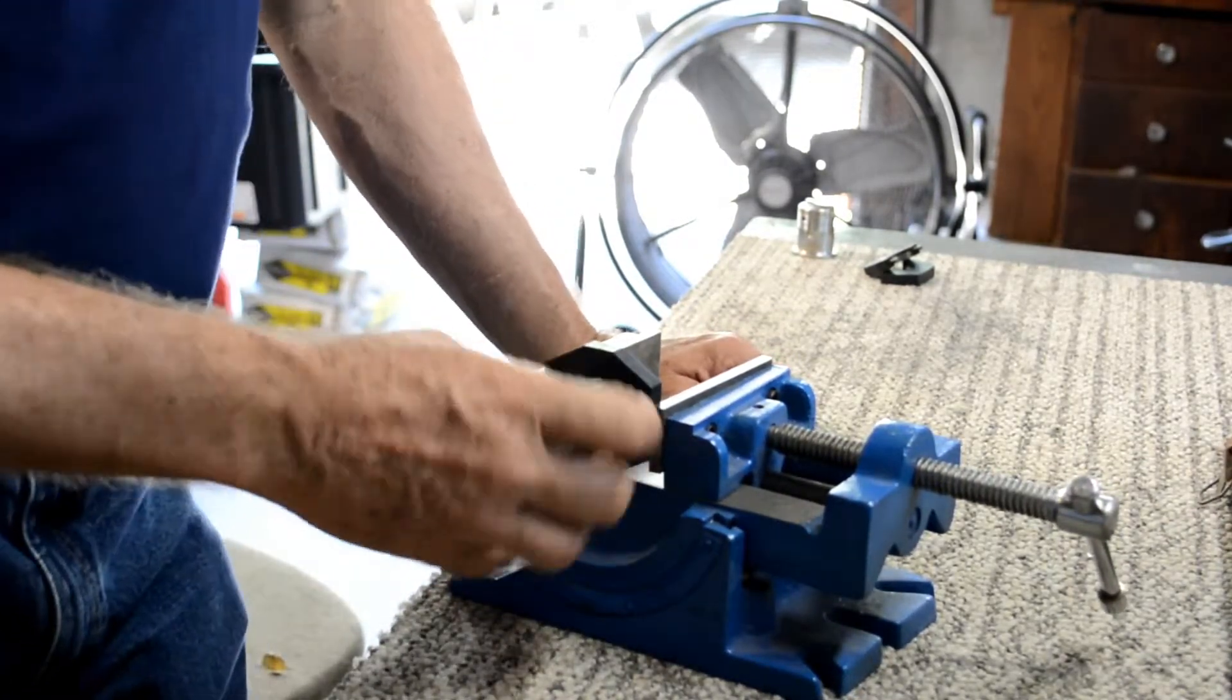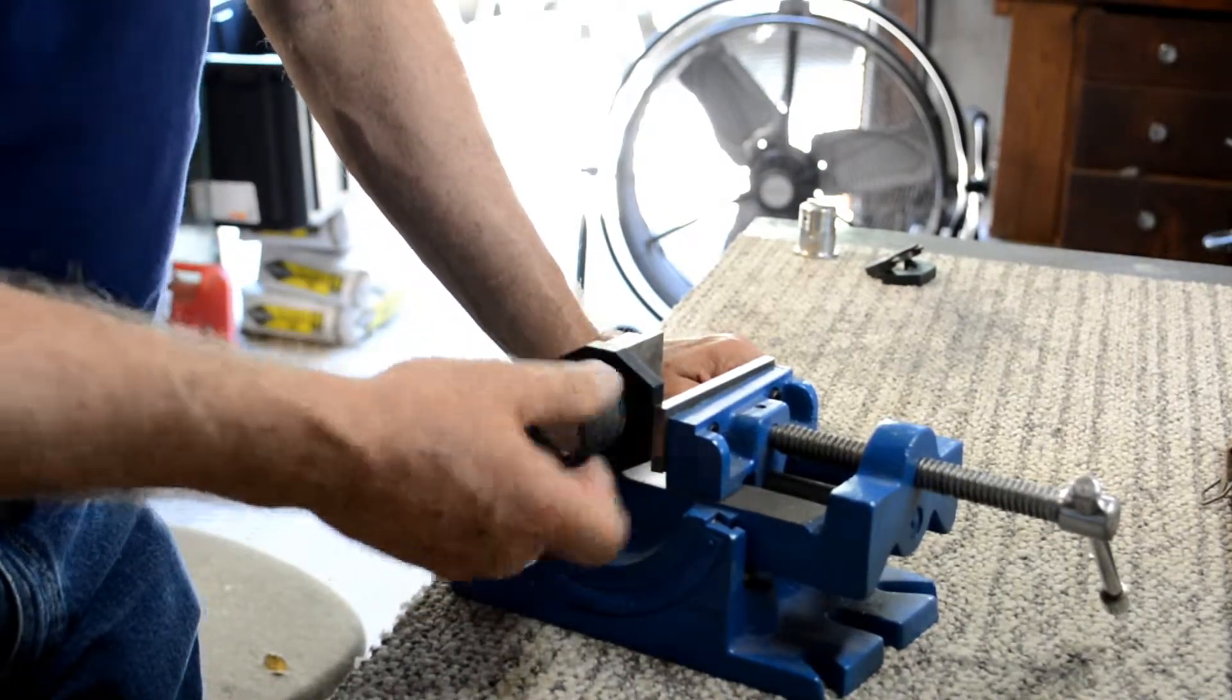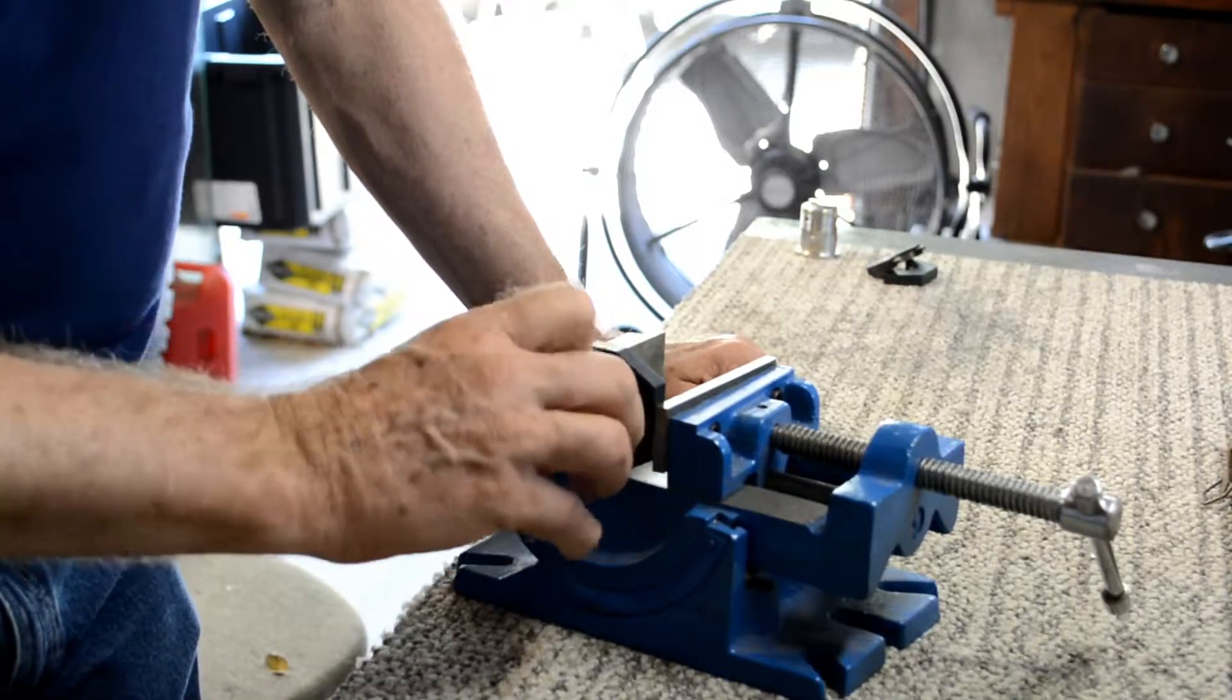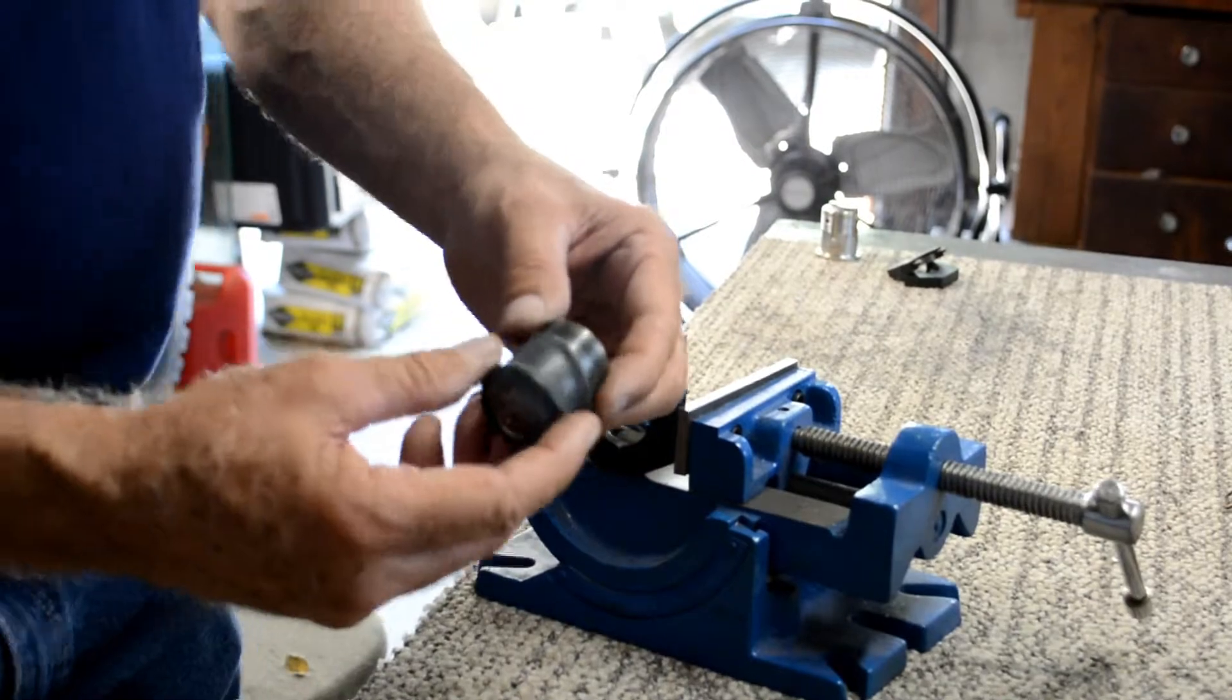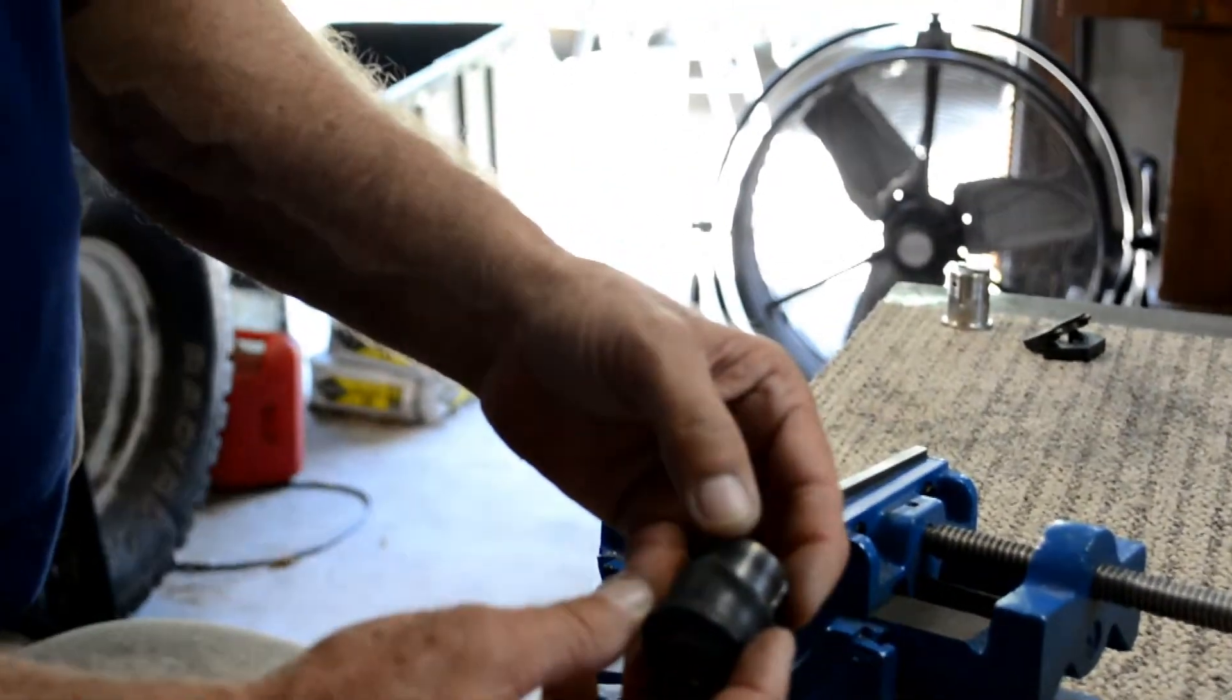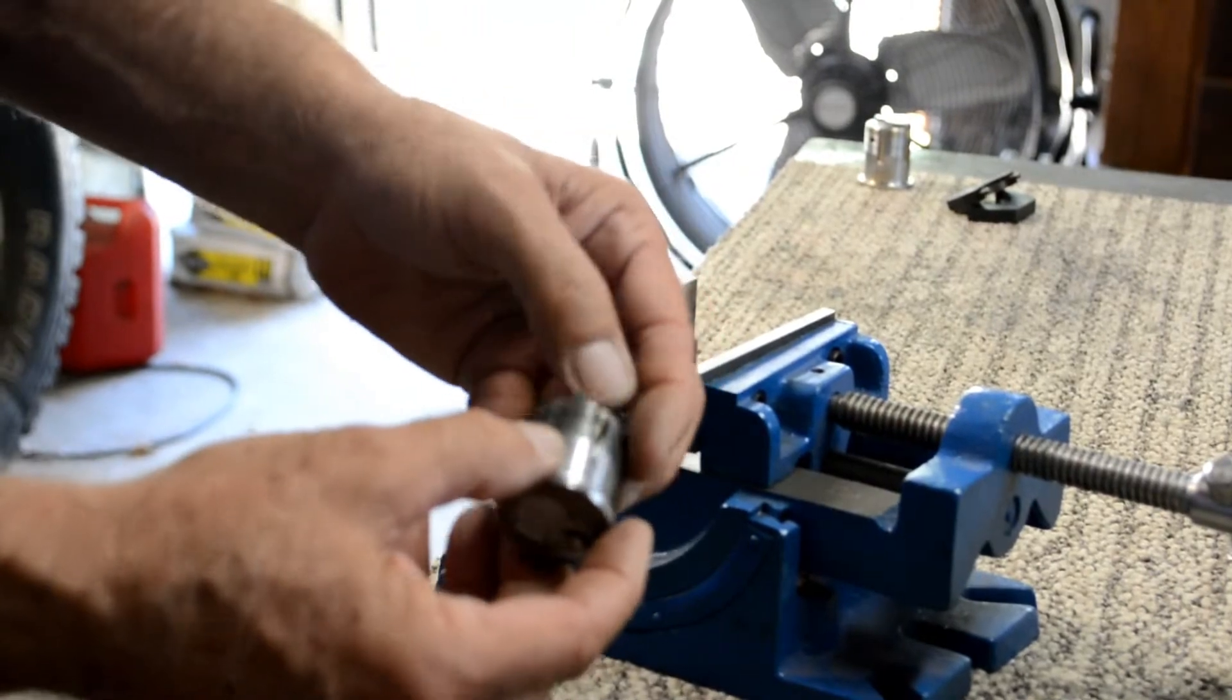Work it back and forth a few times until you actually rotate the mortise cylinder all the way out of the tool. Threads have all cleaned up and have all been restored back to where they'll actually re-thread back in a lock set now.